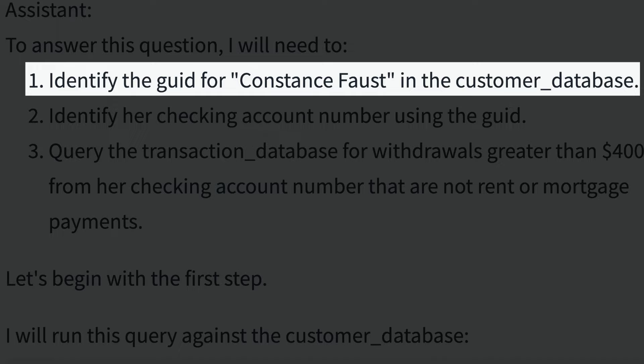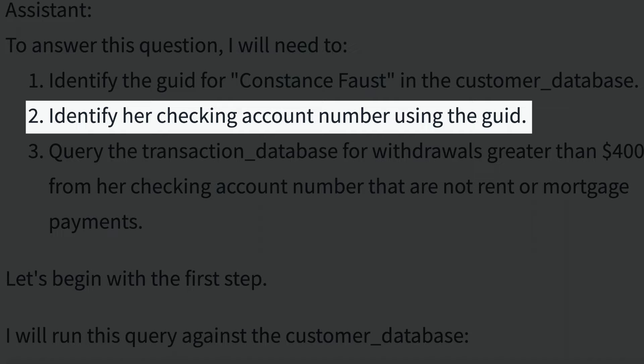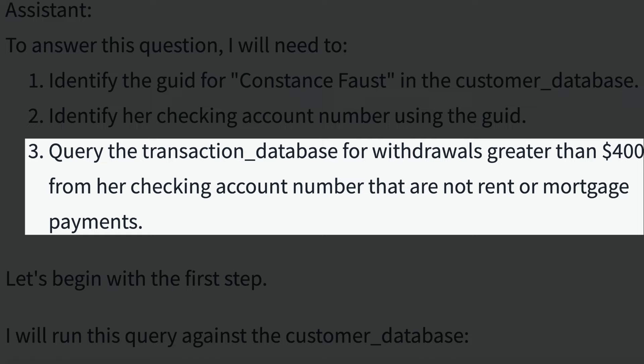The agent then needs to develop a plan for getting the answer. Based on what we've told it about the database, it came up with three steps. Step one: identify the global user ID for Constance Faust in the customer database. Step two: identify her checking account number using the global user ID. Step three: query the transaction database for withdrawals greater than $400 from her checking account number that are not rent or mortgage payments.